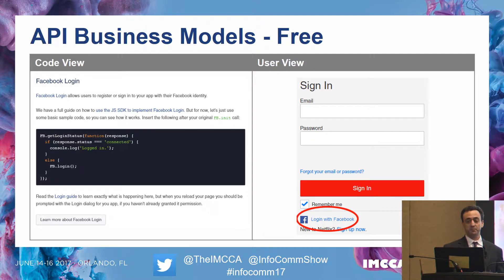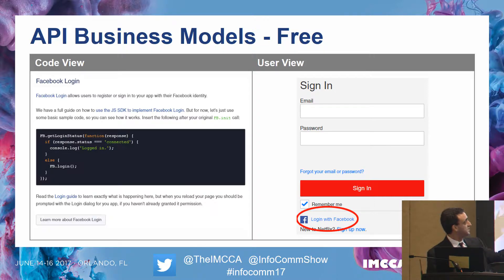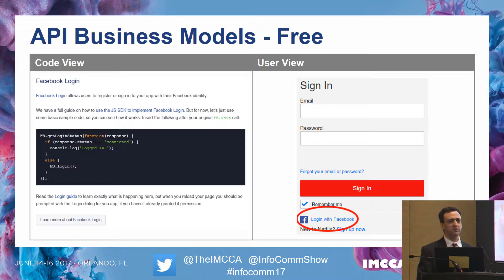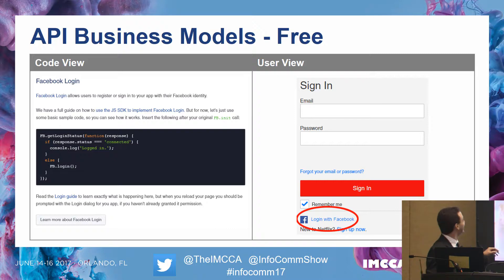So the first business model is free. A very big example is logging into Netflix with Facebook. You see the basic sign-in widget with a 'log into Facebook' button. Instead of creating an account and remembering another password, you click that button. When I first saw this, I thought Facebook and Netflix must have had developers write a lot of complicated code to make this work. But no — I went to the Facebook developer page, and it's just a few lines of code. You put that into your website and it creates it for you. That's what most APIs look like — very easy to work with.